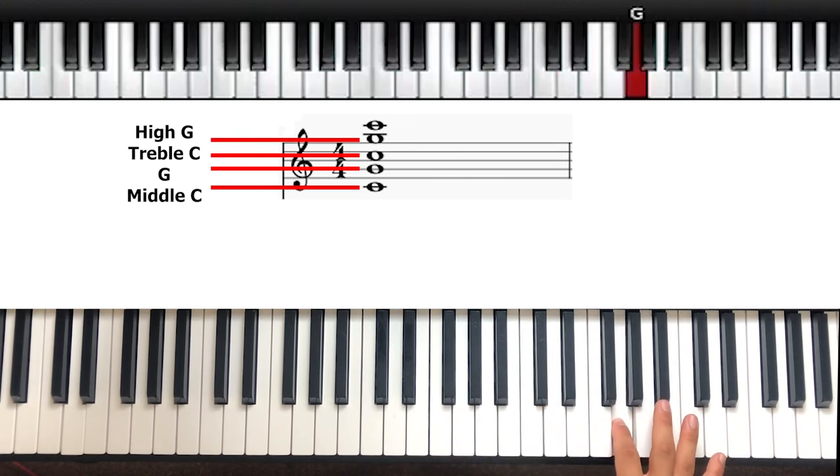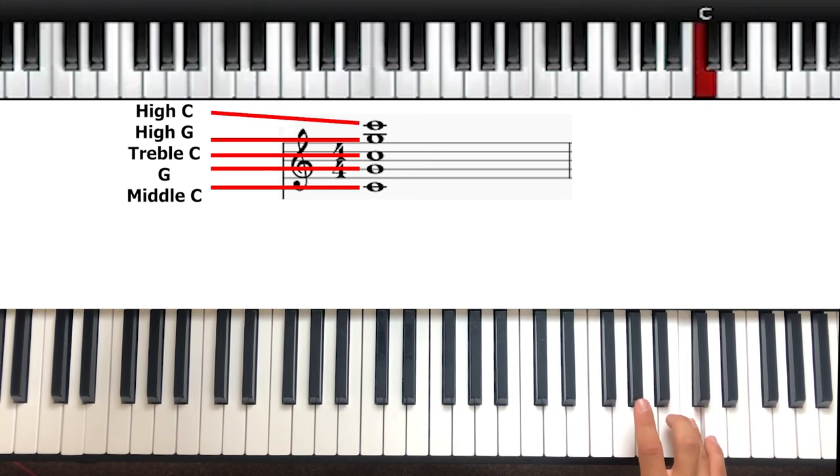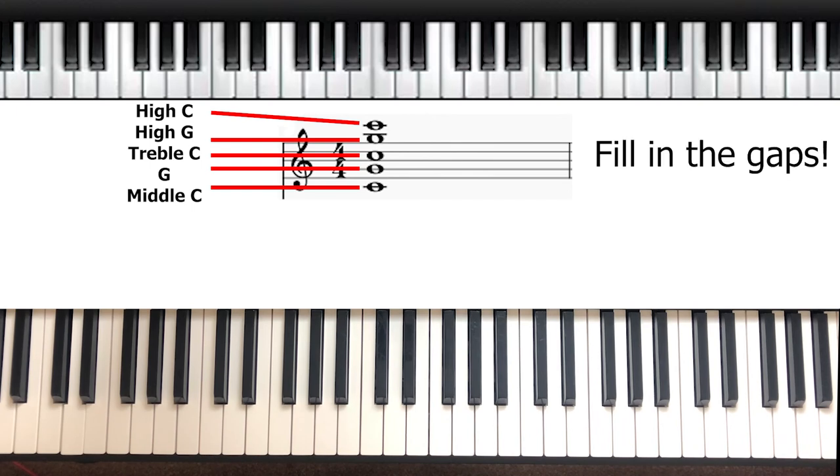high G, which is just above the top line, and then high C, which is two lines above F. Get really used to where these notes are because it gives you signposts that you can work from to figure out the note that you're trying to play. That way you can just fill in the gaps.